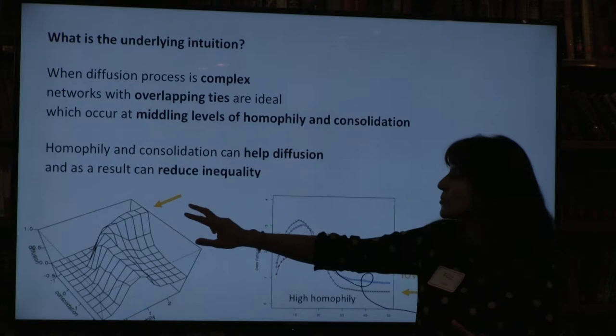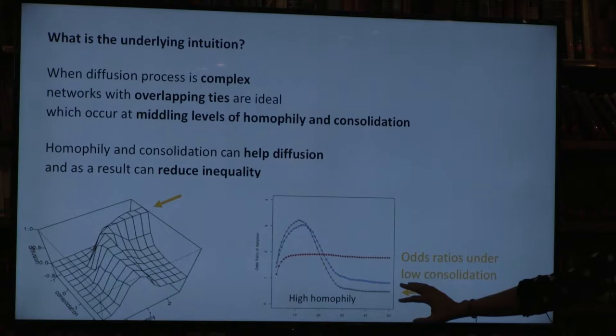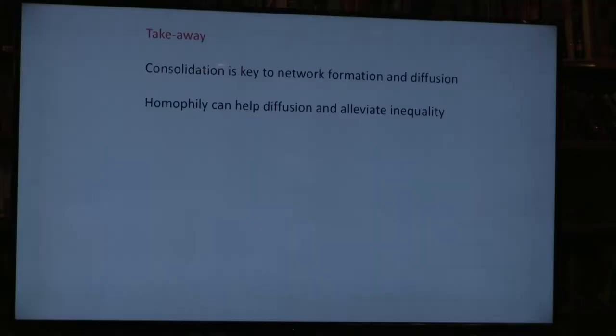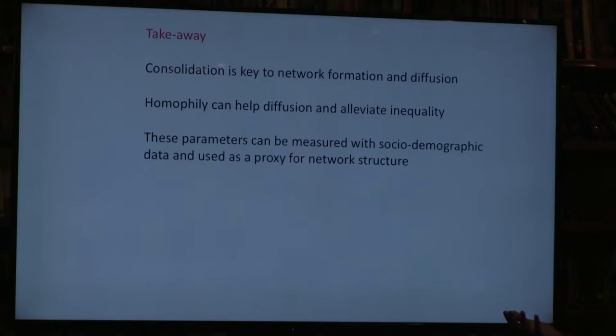The takeaway is that we pay a lot of attention to homophily in sociology and social science at large, but consolidation is actually a structural parameter that's also key to network formation and diffusion. Blau and Schwartz were not entirely right—as Santola showed, homophily can actually help diffusion. Paul and I were also not entirely right—we argued homophily would make inequality worse, but under certain circumstances homophily can alleviate inequality. The advantage of parameters like homophily and consolidation is that they can be measured with population-level sociodemographic data, without network information, and can serve as a proxy for network structure in understanding diffusion.